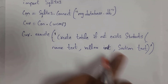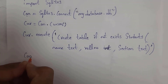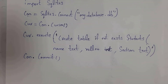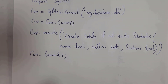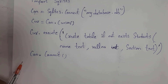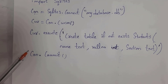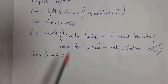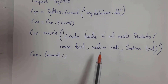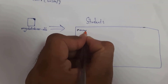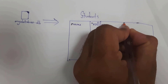After writing the execute line, next write: con.commit(). By using the commit method we can save data permanently in the database. Even if I close this program, this data will be stored permanently. Whenever I run these three lines of code, it will create the students table with three columns: name, roll number, and section.